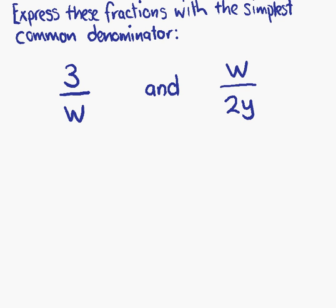We want to express these fractions with the simplest common denominator. This time, we don't just have numbers in our fractions, we also have letters. Thinking back to the technique we used in the previous example, we multiplied the denominator on fraction 1 by the denominator on fraction 2, and vice versa. This achieved the same common denominator on both fractions. So, we do the same thing again.